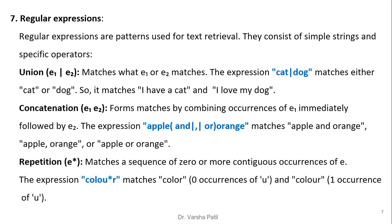Regular expressions are patterns used for text retrieval, consisting of simple strings and specific operators. Union (e1 | e2) matches either expression — for example, 'cat|dog' matches 'I have a cat' or 'I love my dog.' Concatenation forms matches by combining the occurrence of e1 immediately followed by e2 — for example, 'apple and orange' using concatenation operators like 'and,' comma, or 'or' will match 'apple and orange,' 'apple, orange,' and 'apple or orange.'